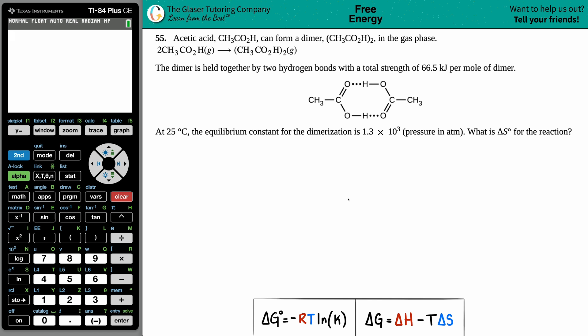Number 55: Acetic acid, which is CH₃CO₂H, can form a dimer (CH₃CO₂H)₂ in the gaseous phase. They give us the balanced equation showing that if you have two acetic acids you can fuse them together to form a dimer. Now the dimer is held together by two hydrogen bonds with a total strength of 66.5 kilojoules per mole of dimer.